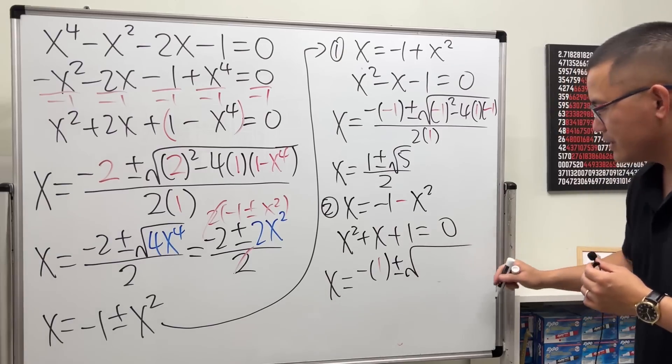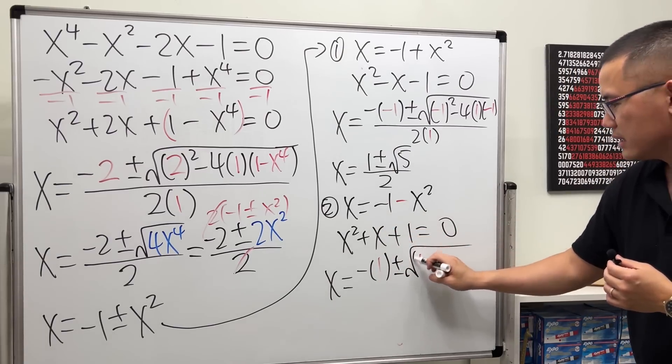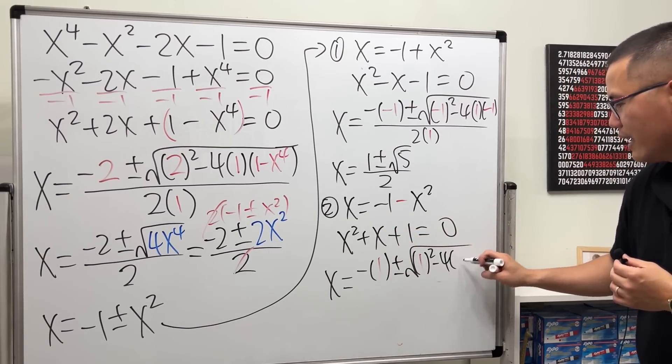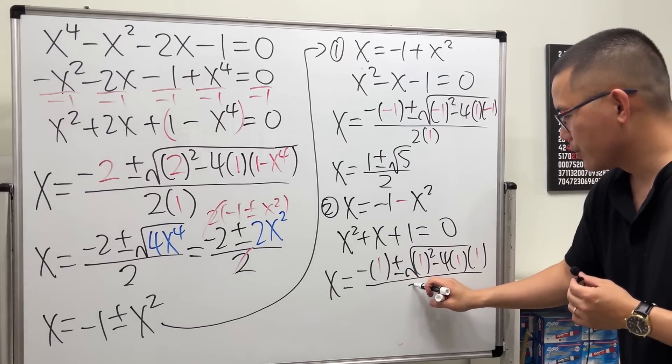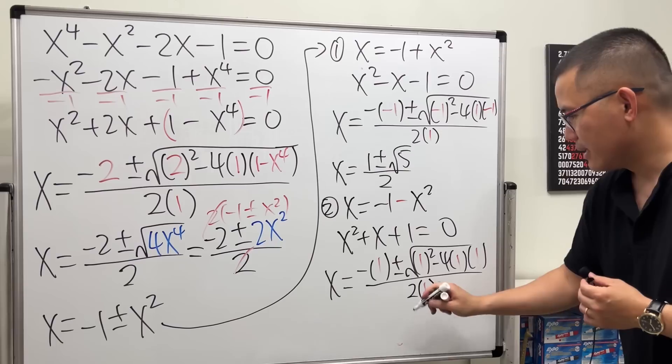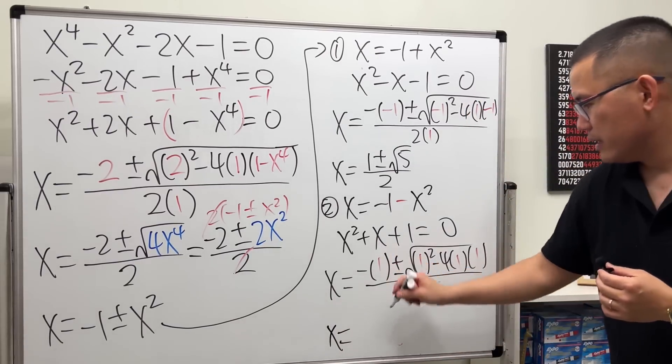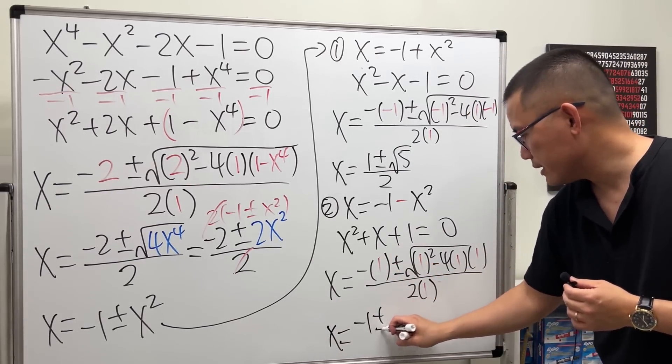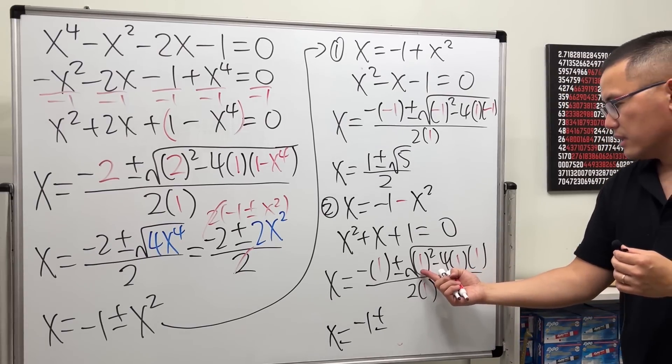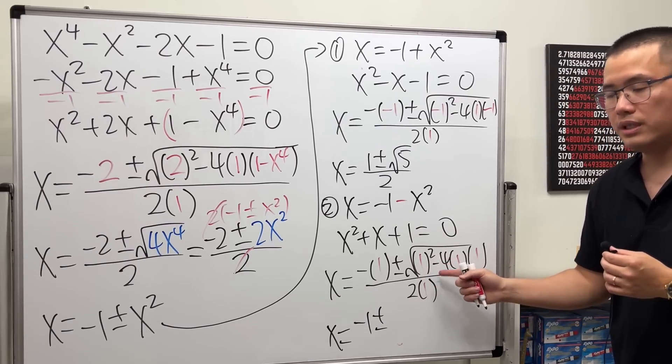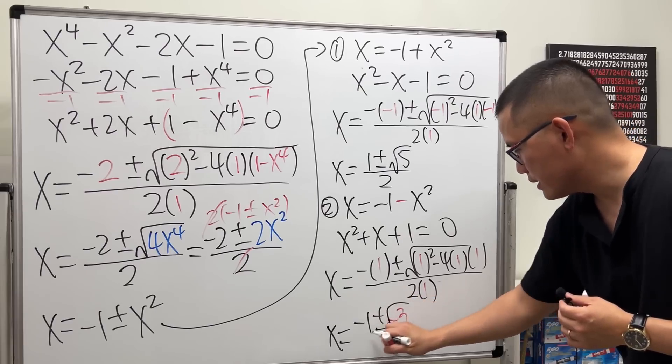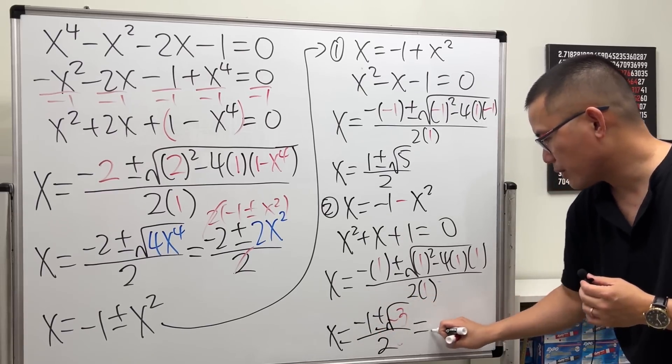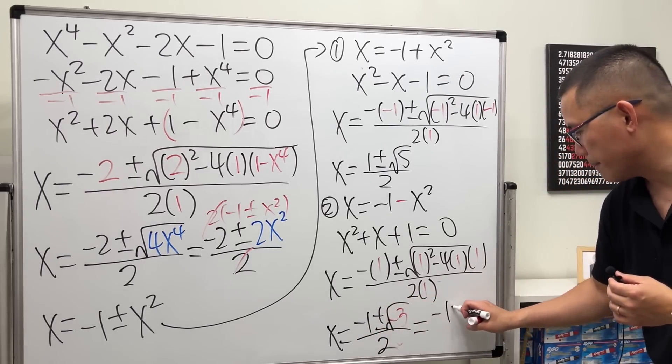Quadratic formula again: negative 1 plus or minus square root, 1 squared minus 4ac, 1 and 1, all over 2 times 1. So x equals negative 1 plus or minus, check this out, 1 minus 4 is negative 3 in the square root.